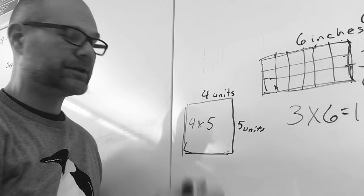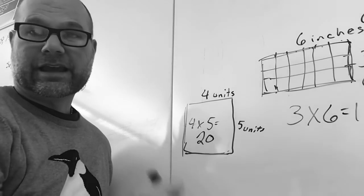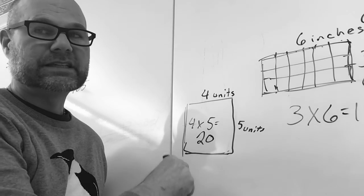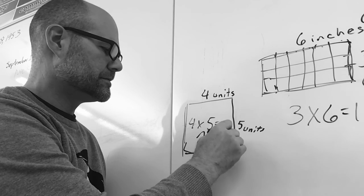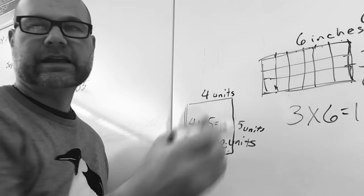Right, 20. And we're not done. We want to do 20 square units. And that's how you find the area. Thank you.